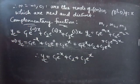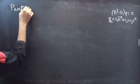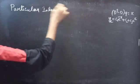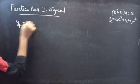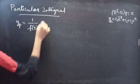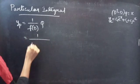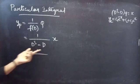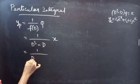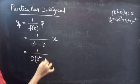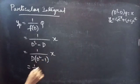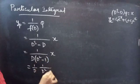Now let us find the particular integral. We find yp using (1/f(D))·Q. We have f(D) = D³ - D and Q = x. Take D common from the denominator: D(D² - 1). We can split the fraction as (1/D)·(1/(D² - 1))·x.